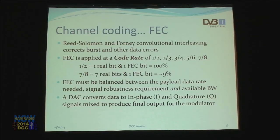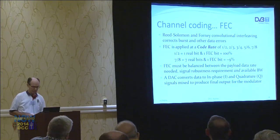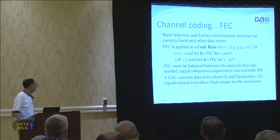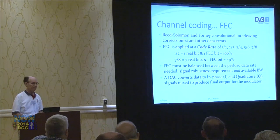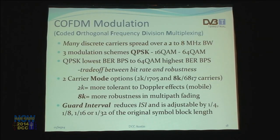More forward error correction gives a better chance of getting your signal through in weak-signal conditions, but adds latency — more than the one second Ken mentioned — which can cause lip sync issues in voice applications. FEC must be balanced between payload data rate, signal robustness, and available bandwidth. A DAC converts data in-phase to I and Q, which is mixed to produce the modulator output. The modulation used is OFDM — Coded Orthogonal Frequency Division Multiplexing — with many discrete carriers, running 2 to 8 MHz bandwidth.